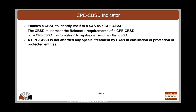A basic feature in Release 2 is the CPE CBSD indicator. If you are a Customer Premise Equipment CBSD, you can provide that indication to the SAS. CPE CBSDs are allowed to bootstrap their registration through another CBSD because they may not have internet connection themselves. The CPE CBSD is not afforded any special treatment with regard to interference protection for protected entities, but it is useful for the SAS to know that a particular CBSD is operating as a CPE CBSD.